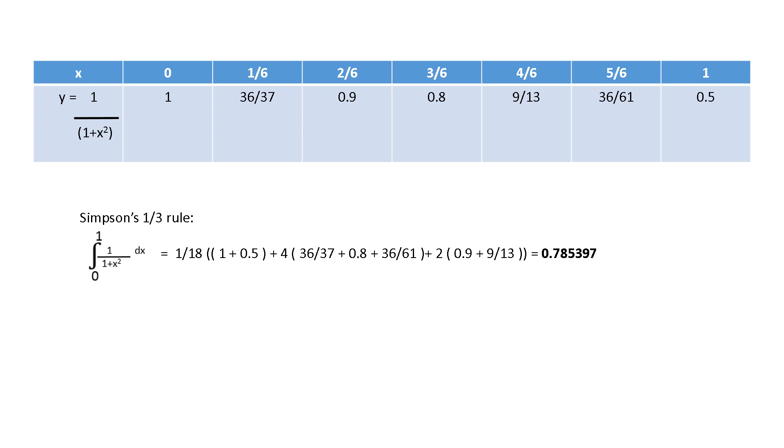Now, direct substitution in the formula. Simpson's 1 by 3 rule. Direct substitution. Go for 1 by 18 and then 1 plus 0.5, so this way you have to solve. You are having the equation. Just substitute. Y0, Y0 is 0 and Yn is 1. Take the other values. Direct substitution and you will get the answer. This is Simpson's 1 by 3 rule.